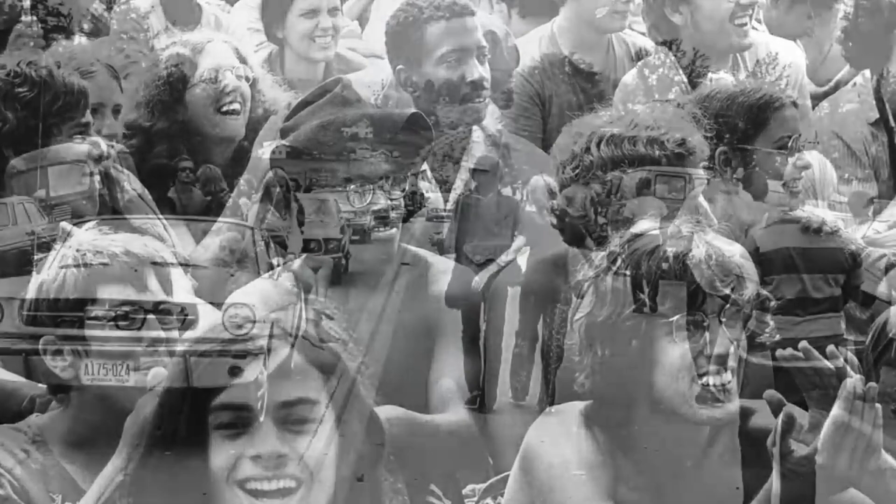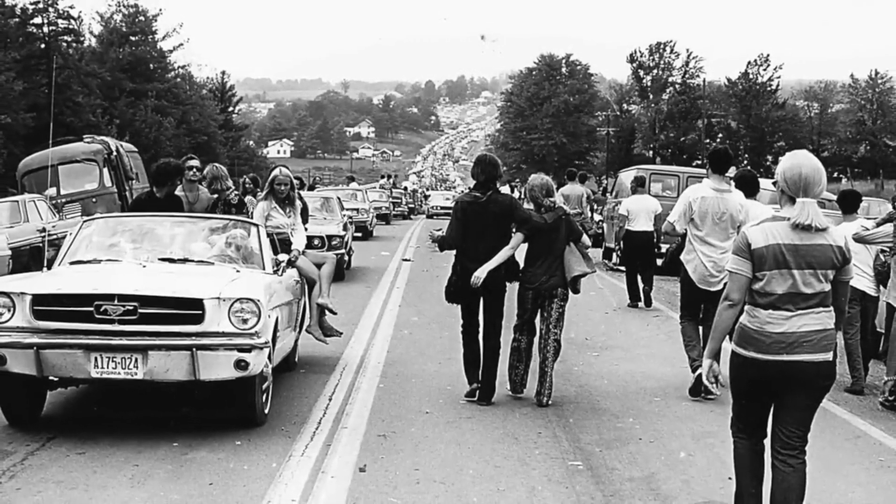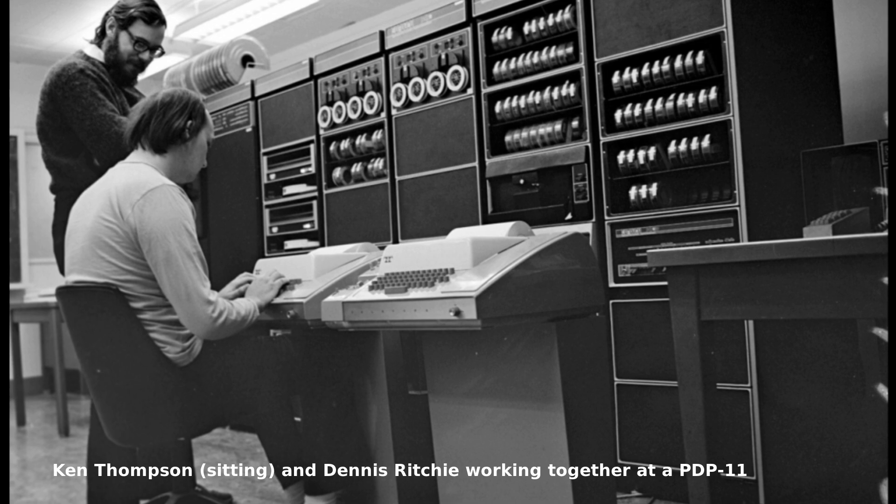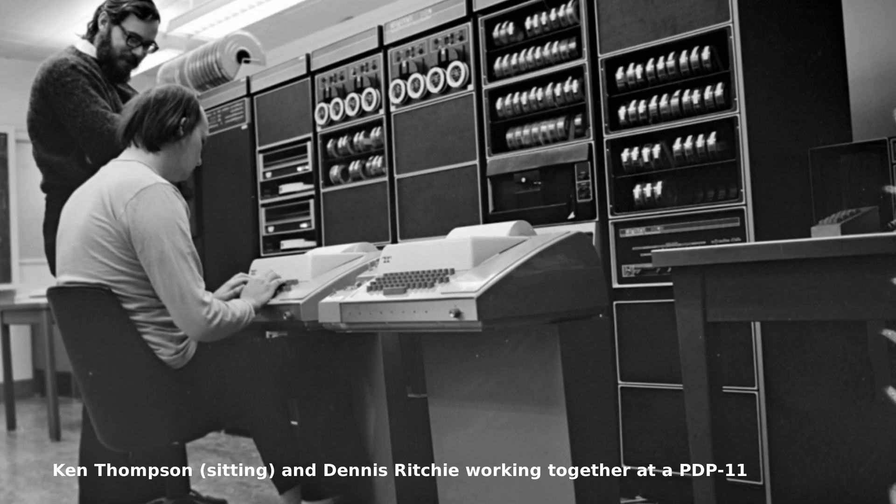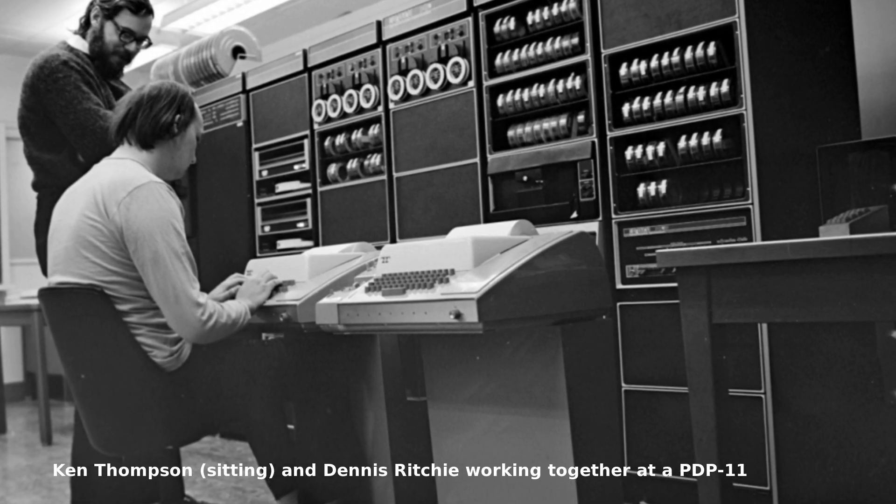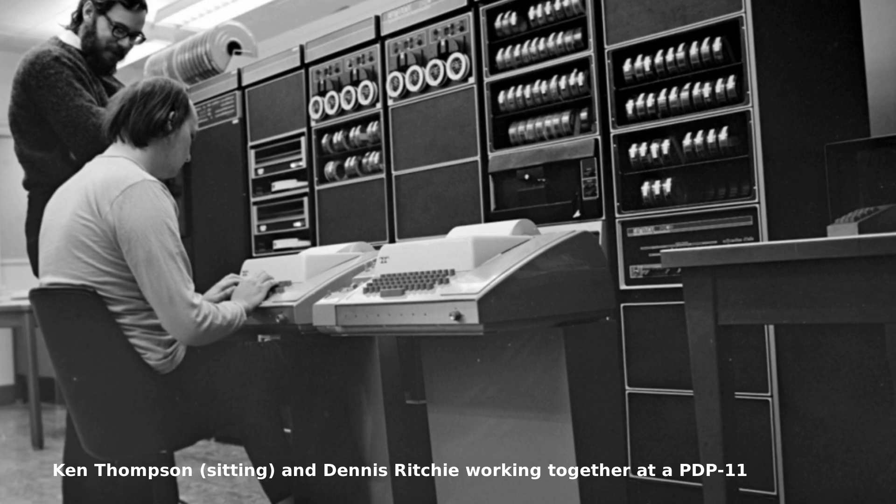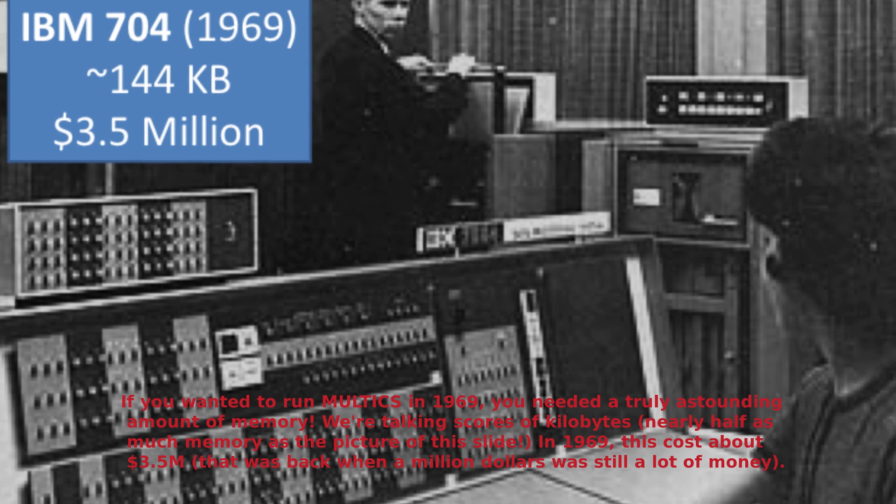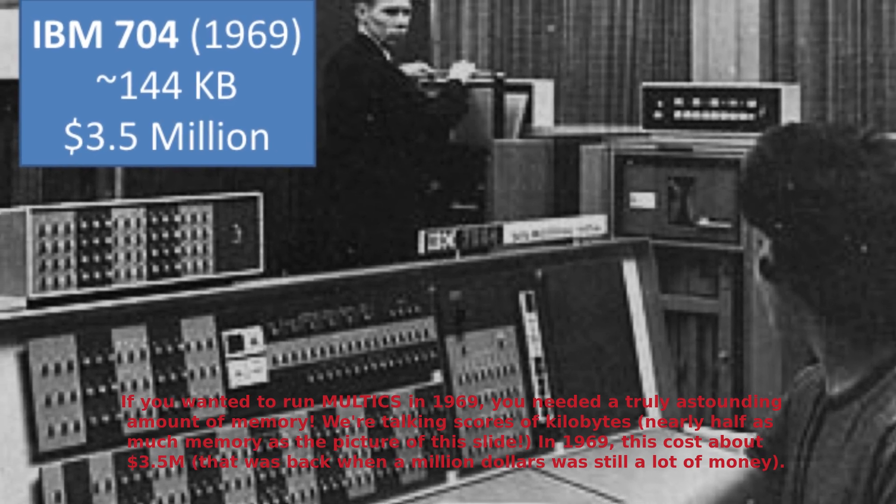It all began in 1969, when Ken Thompson, Dennis Ritchie, and other researchers at AT&T's Bell Labs started working on an operating system for a small PDP-7 computer. This system, initially called Unics, a play on words inspired by Multics, a previous project, would become Unix.